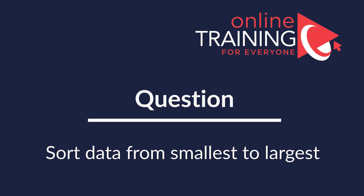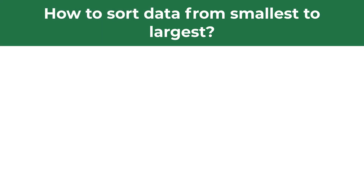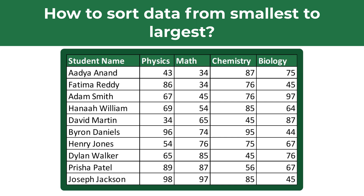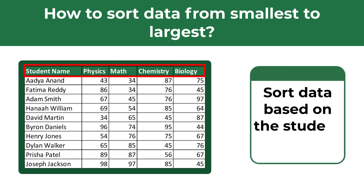A lot of times you might get a question on how to sort data in Excel from smallest to largest. For example, you might be presented with a data set which shows student names and their grades on different subjects. Here on the screen we see the grades in physics, math, chemistry, and biology. And we need to sort this data set based on the student names.